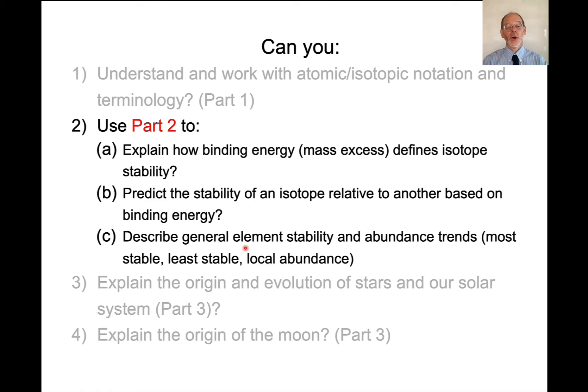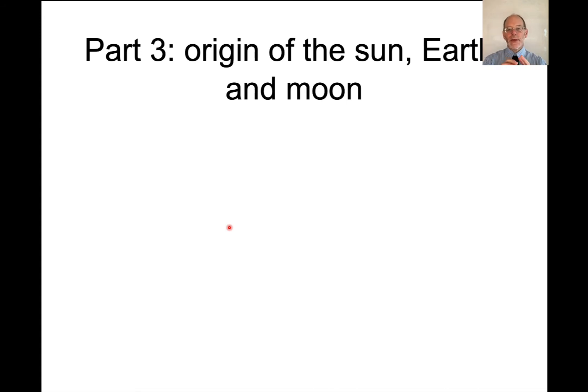So now that we've gone through this, if you went back and reviewed, I would hope you would be able to explain how binding energy or mass excess defines isotope stability. So higher binding energy, larger mass excesses increase isotope stability. Predict the stability of an isotope relative to another based on binding energy. So that's like the radium to radon plus alpha particle. Which side of that reaction is the stable one? And you can assess this based on masses. And then basically describe element stability and abundance trends for, especially with respect to isotopes. So which isotopes are more stable, which are less stable. Again, looking at masses.